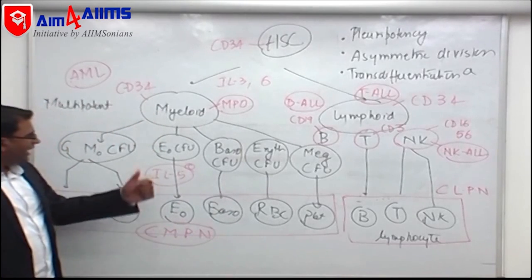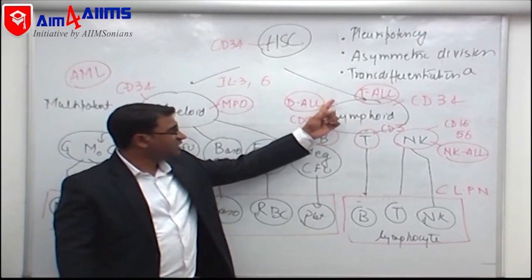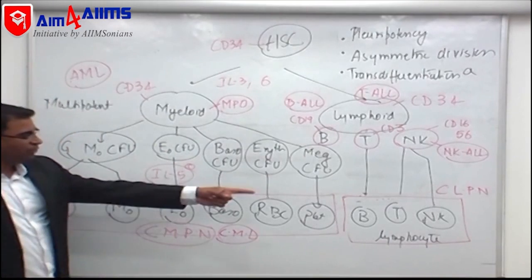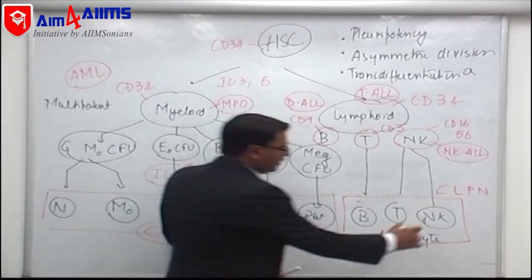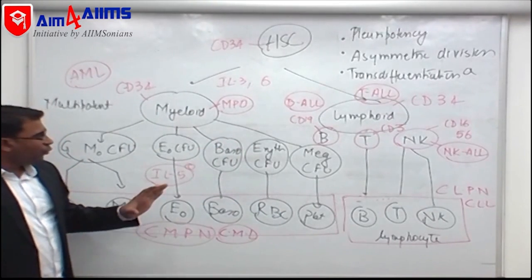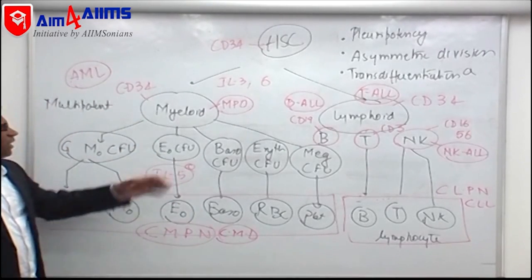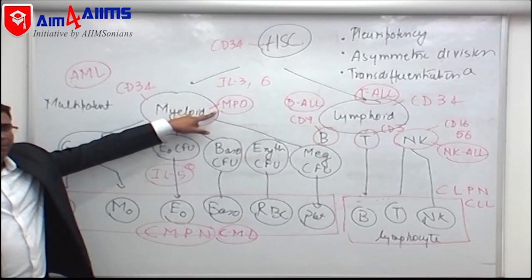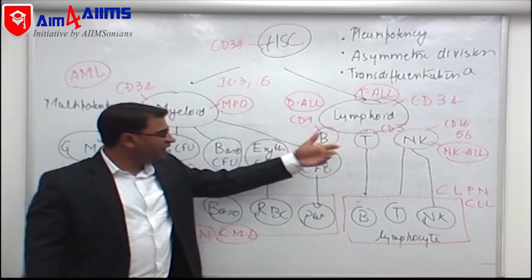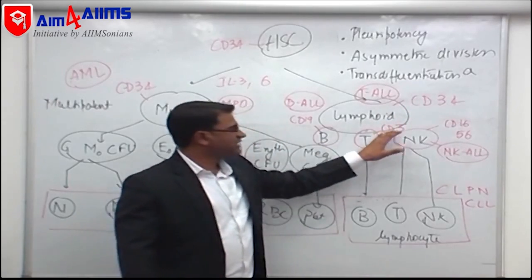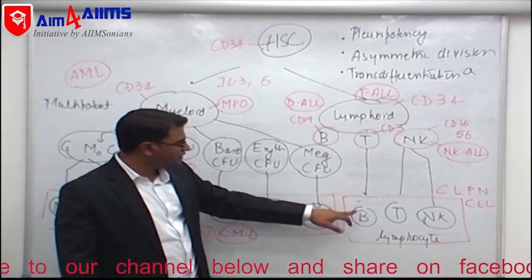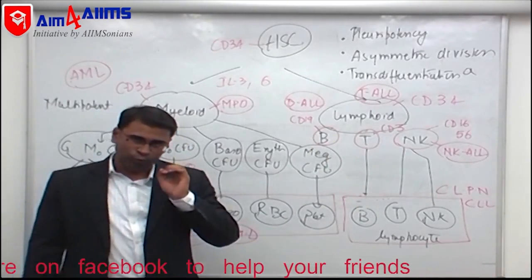Today we will cover one example from each category: AML, ALL, CML, and CLL. To summarize the markers: AML is CD34 positive and MPO positive; B-ALL is CD34 positive and CD19 positive; T-ALL is CD34 positive and CD3 positive; CLL is CD34 negative and CD19 positive, because it arises from mature B lymphocytes. With this concept established, we are moving into core hematology starting with acute leukemia.